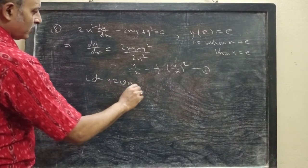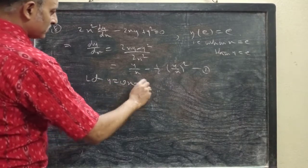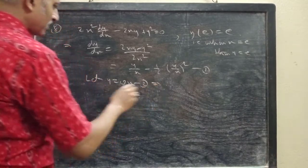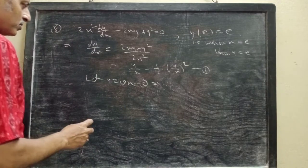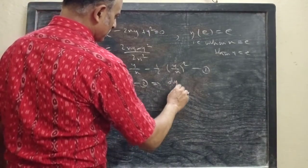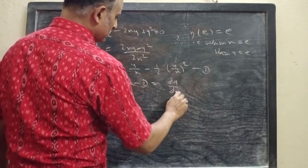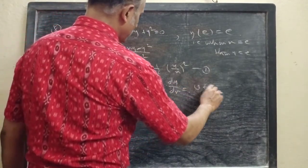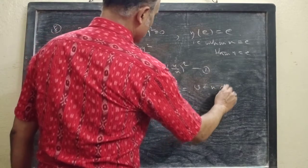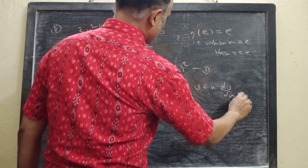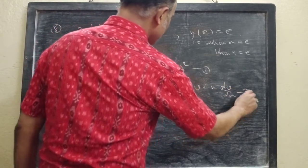Let v equals y/x — this is equation 2. Now differentiating both sides of equation 2 with respect to x, we get dy/dx equals v plus x·(dv/dx). This is equation 3.